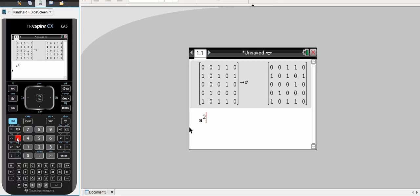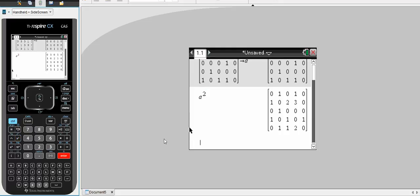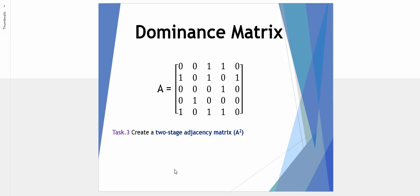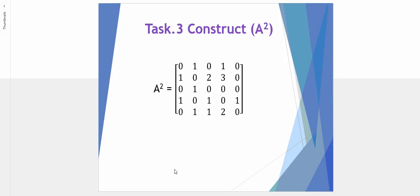If I want to find A squared, A to the power of 2, press enter. And here now is my second or two-step or two-stage adjacency matrix. So if we were to return, we can see now here is our two-step adjacency matrix.